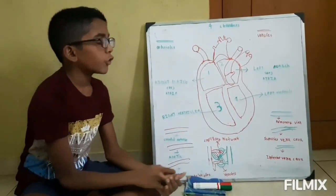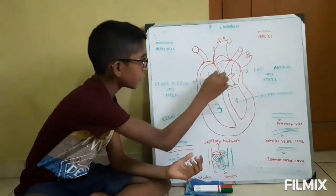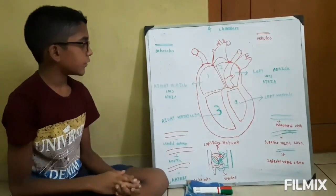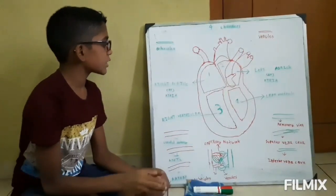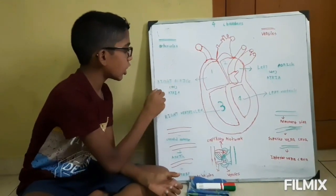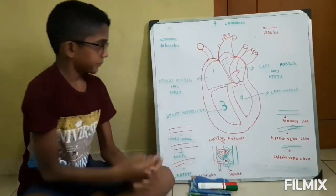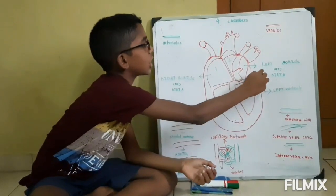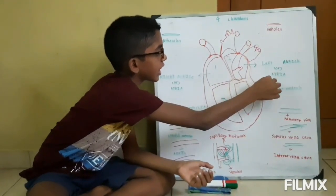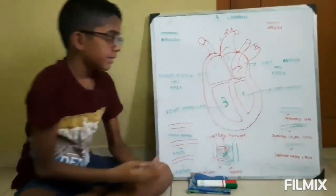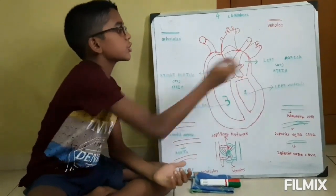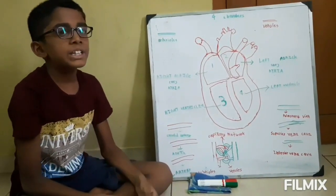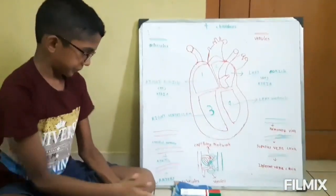First, let's see the four chambers of the heart. The first chamber is called the Right Auricle or Atria. The second chamber is called the Left Auricle or Atria. These two chambers are the upper chambers of the human heart.